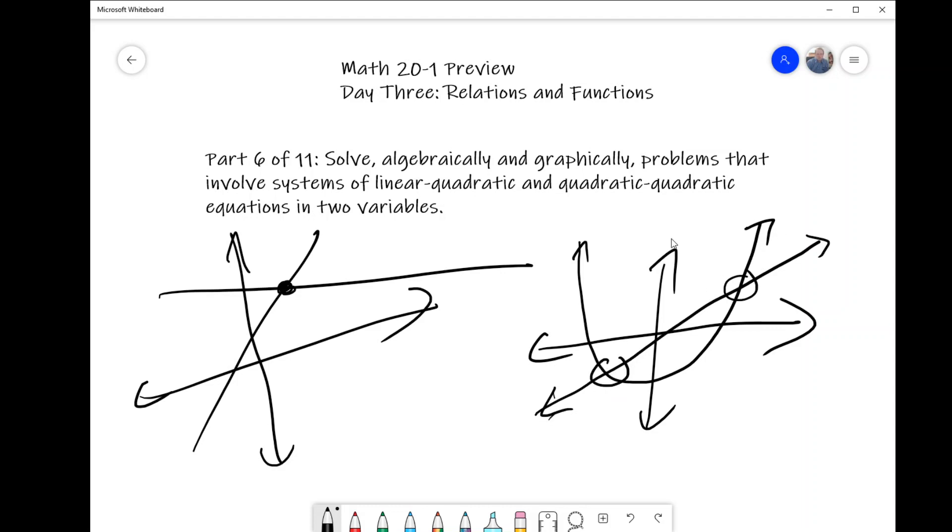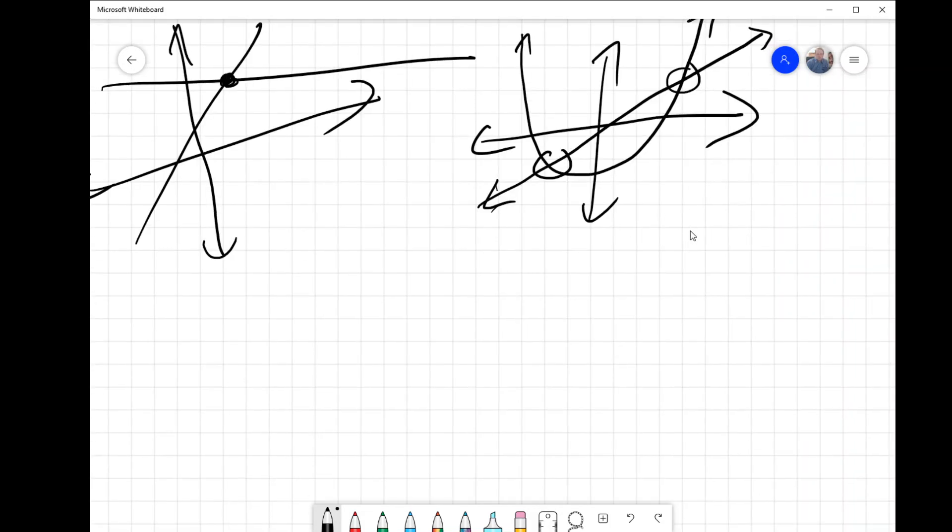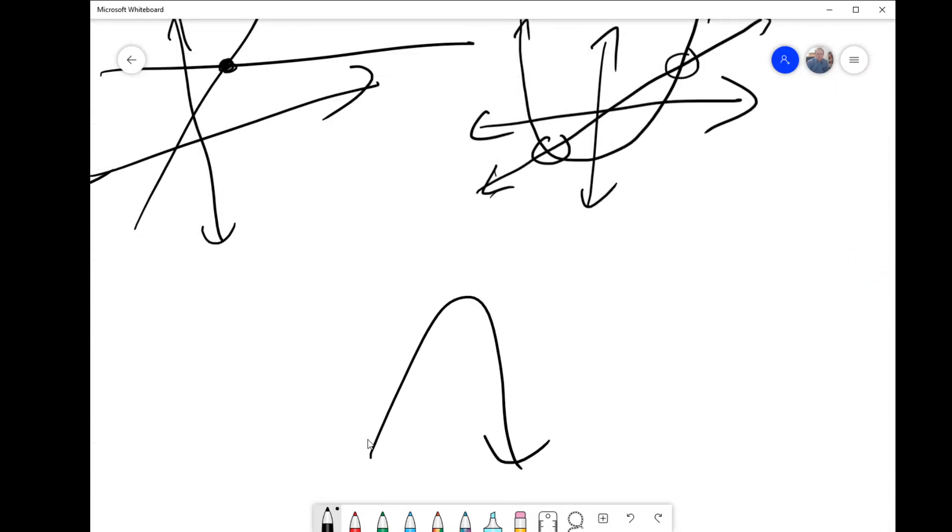We could have a linear graph that intersects a curve, or we could have two quadratics that are intersecting. These are the kinds of functions we're going to have to deal with and we're going to have to find these intersections.